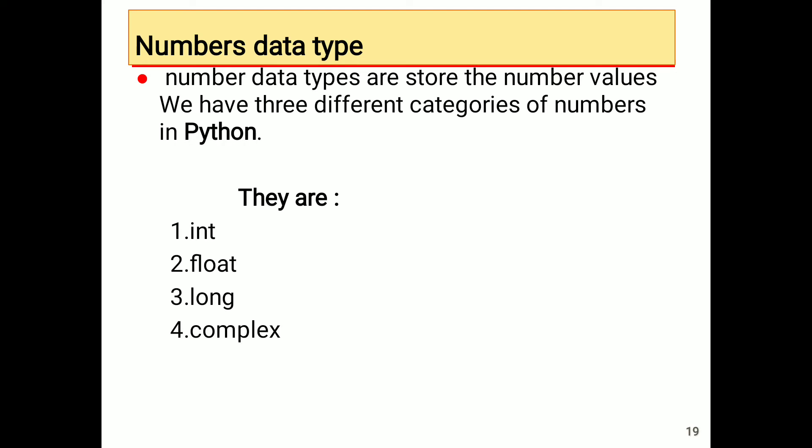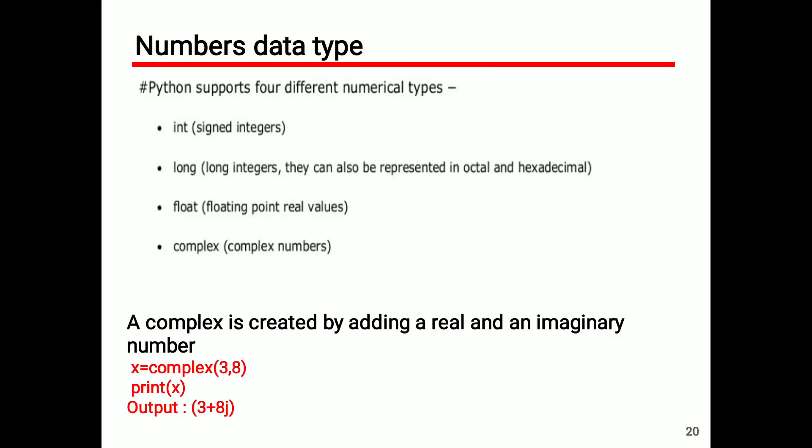We have three different categories of numbers in Python: int, float, long, and complex. Int refers to signed integers. Long integers can also be represented in octal (base 8) and hexadecimal (base 16) forms. Float refers to floating-point real values. A complex number is created by adding a real and imaginary part — for example, x = complex(3, 5), which outputs 3+5j.